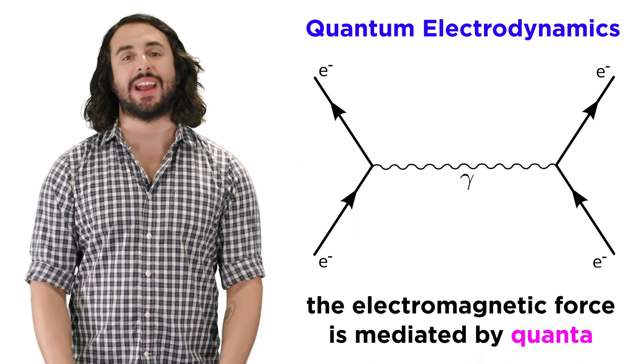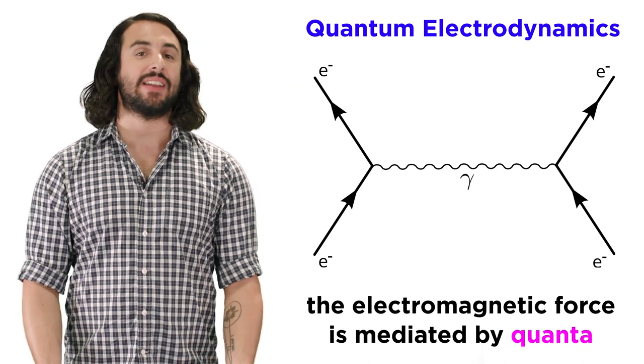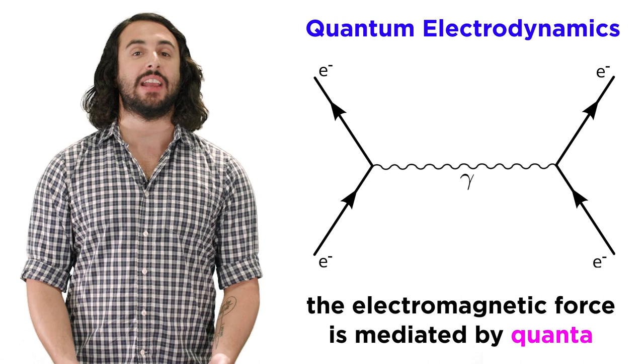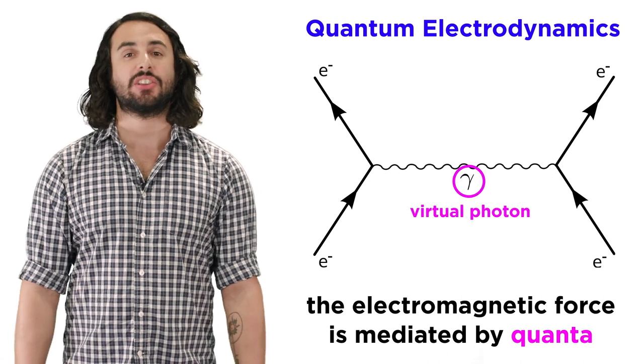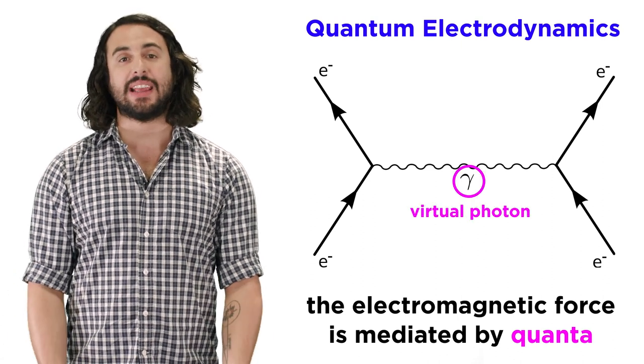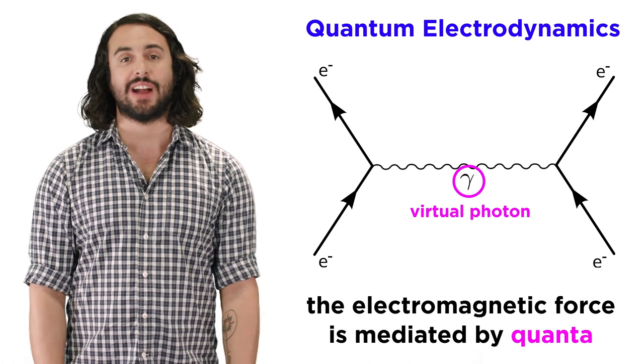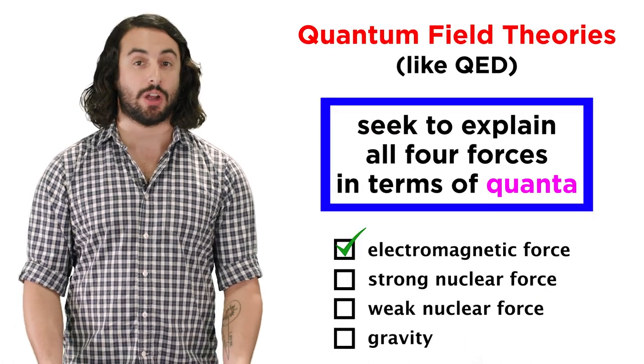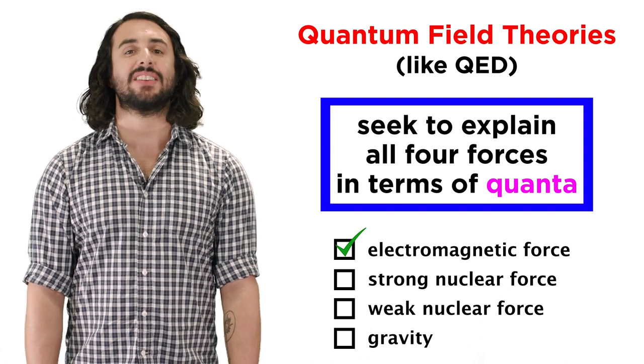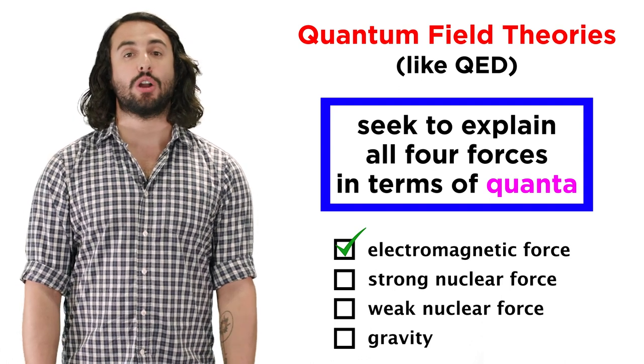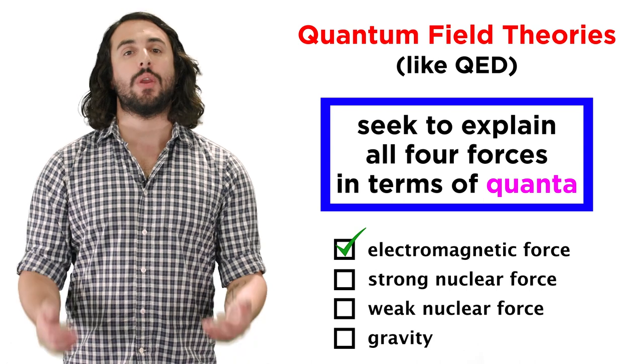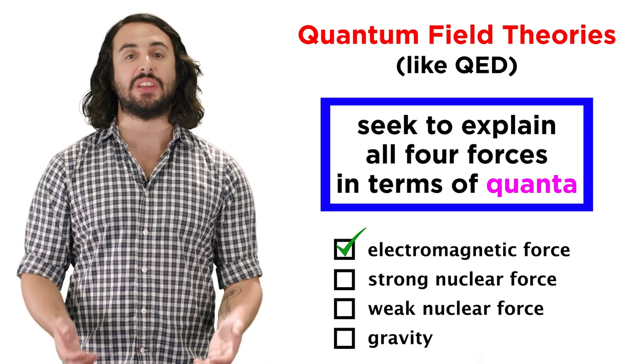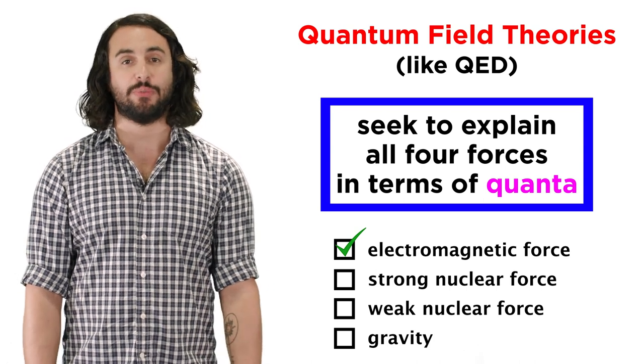We saw how quantum electrodynamics takes the electromagnetic force and explains it in terms of quanta, an exchange of particles that mediates the force, virtual photons in this case. There are three more fundamental forces to go: the strong and weak nuclear forces, as well as gravity. For a coherent view of the universe, we must be able to explain each of these forces with its own quantum field theory.